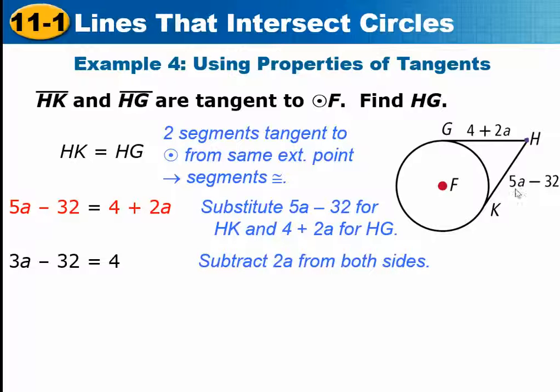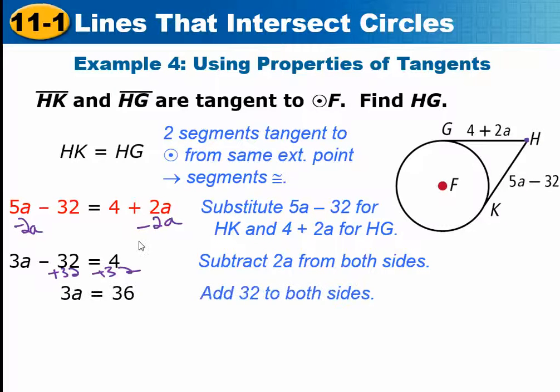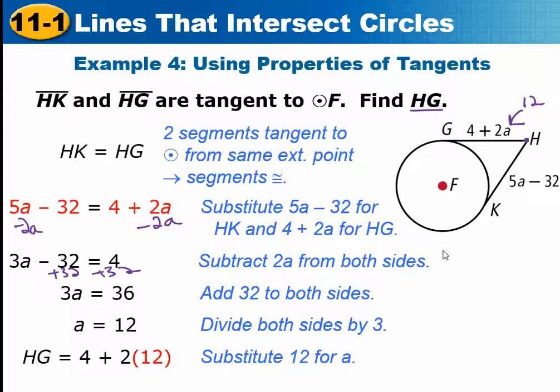And they get 3A minus 32 equals 4, then add 32. To get 3A equals 36, divide by 3, and A equals 12. Now the question asked for HG, so you would plug 12 back in here for A, and 4 plus 24 is equal to 28. So you set them equal to each other and then solve for the variable.